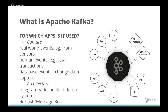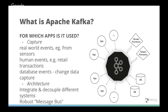Diving into use cases: Kafka is used to collect events from real-world devices like IoT devices, from human events like retail transactions, and also from database events. You can build a just-in-time data warehouse based on change data capture events, and it allows integrating complex architectures.